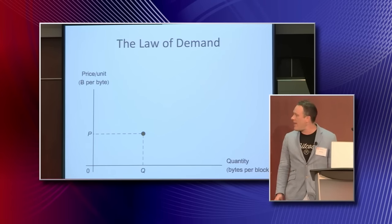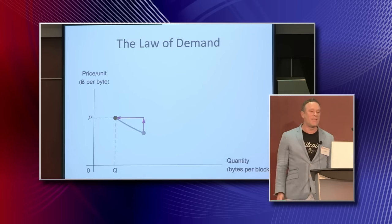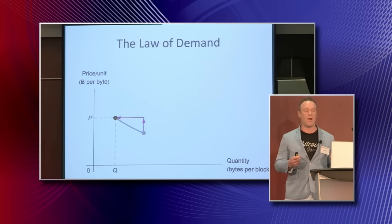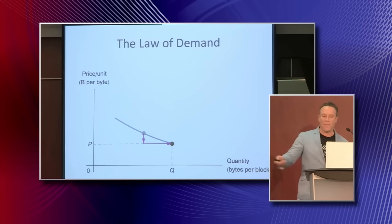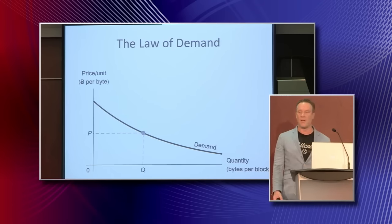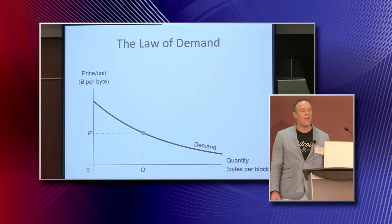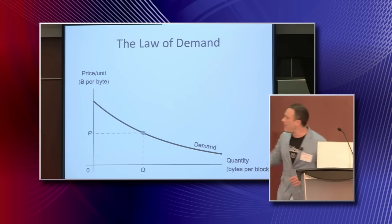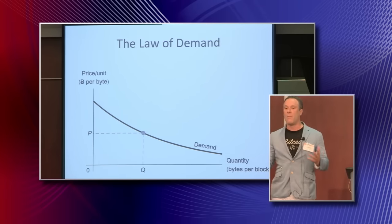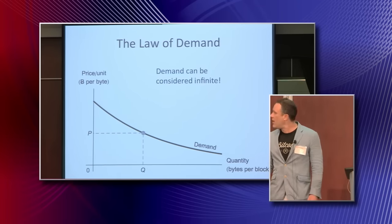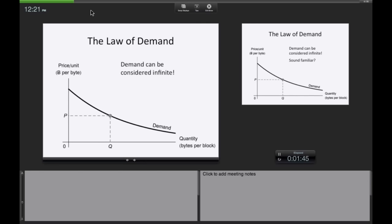The law of demand states that as the unit price for a commodity increases, the total quantity demanded by the market tends to decrease. Conversely, as the price falls, the total quantity increases. We can imagine appending a bunch of points to form what's called the demand curve. What's interesting about the demand curve is that if the price per unit gets low enough, the quantity demanded can become arbitrarily high — in other words, demand can be considered infinite.